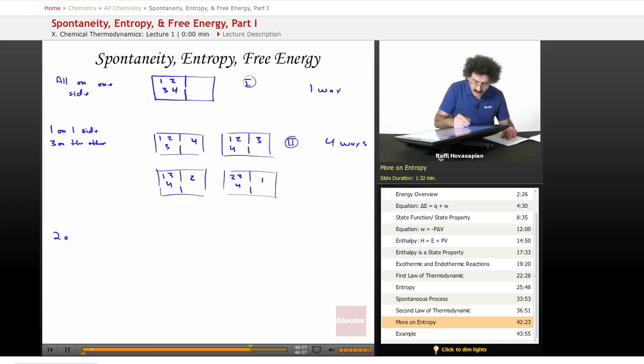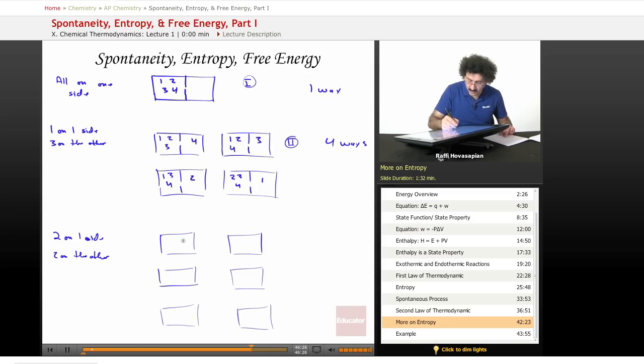How about two on one side, two on the other? One, two, three, four, five, six. So we can have one, two, three, four, we can have one, three, two, four, we can have one, four, three, two. We can have two, three, one, four, three, four, one, two, two, four, one, three. Interesting.